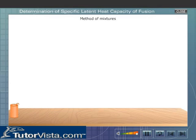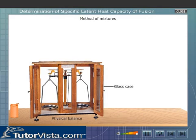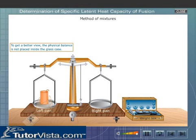Take the copper calorimeter with a stirrer. Find the mass of the calorimeter using a physical balance.